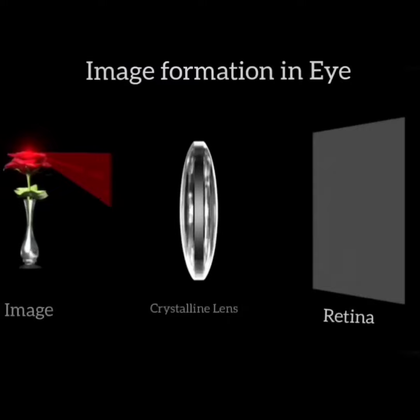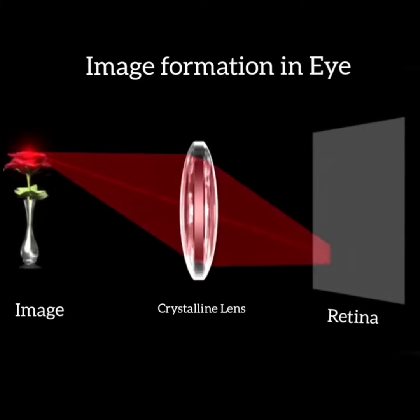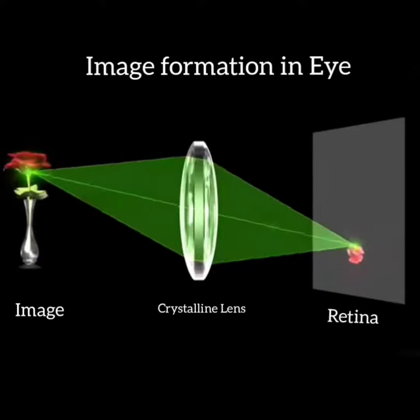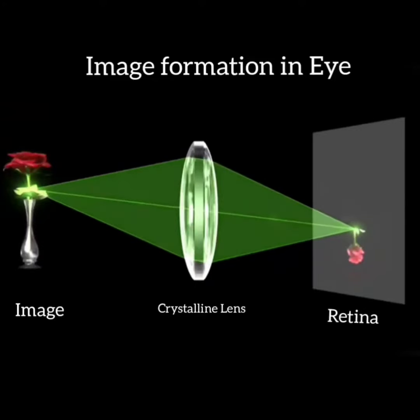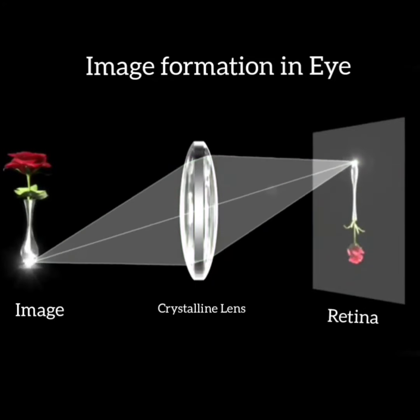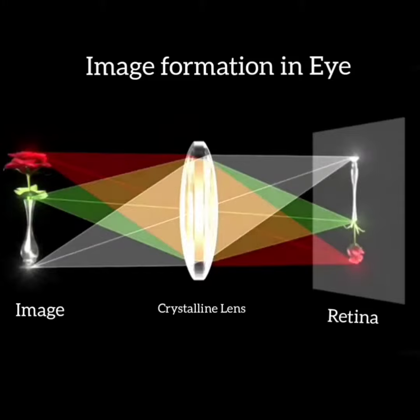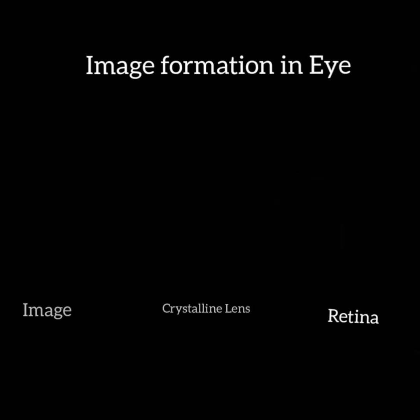When light rays pass through the lens, they refract and converge to a single point to produce an image. Because the image passes through the lens to the opposite side, it is projected upside down.